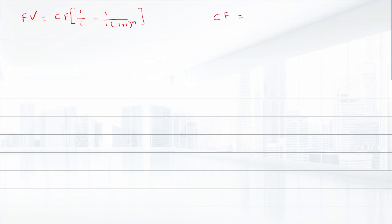The cash flow is $1,250, n is 13 years, and the interest rate is 7.5%. Since this annuity pays monthly installments, n will be 13 × 12 = 156, and the monthly interest rate will be 0.00625. So the future value of this annuity will be equal to $328,627.30.